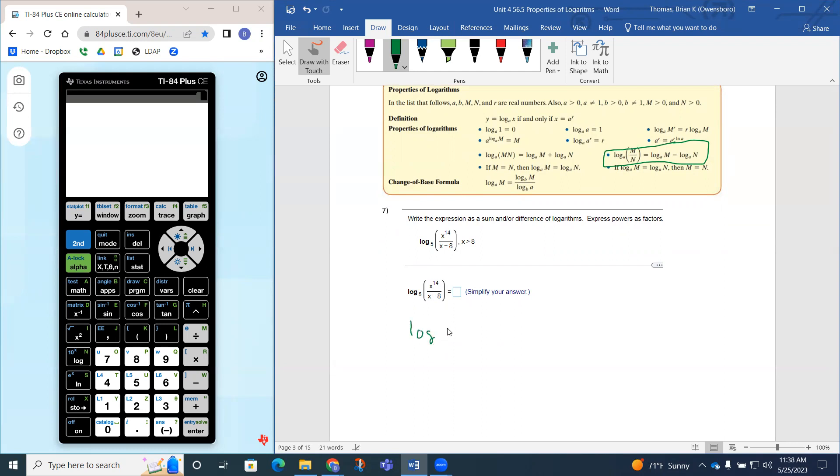So the log of x to the 14th minus the log of x minus 8. And these are both base 5s.